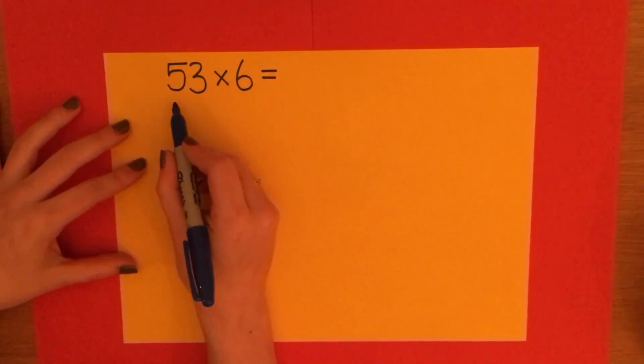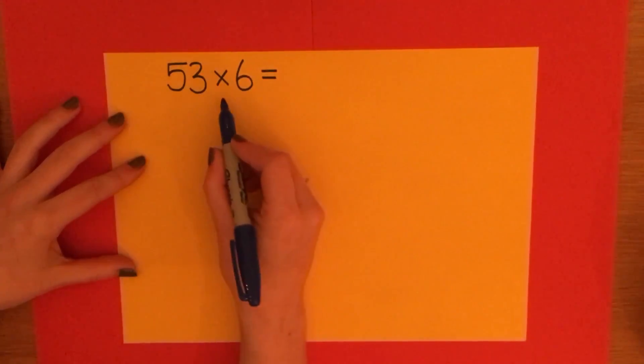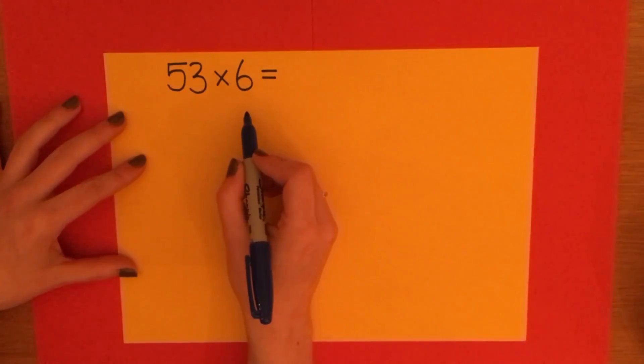My question to start us off is 53 multiplied by 6. And I'm going to start this method by putting both of these numbers in columns.